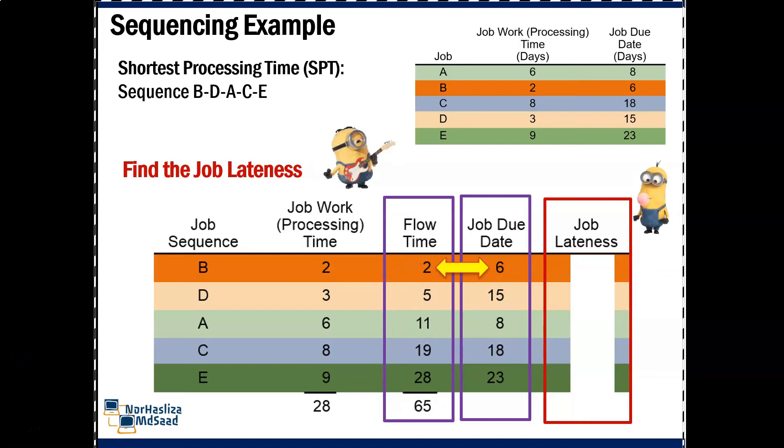For B, flow time is 2, job due date is 6, so it is still in the time range, no job lateness. For D, flow time is 5 and job due date is 15, no job lateness.